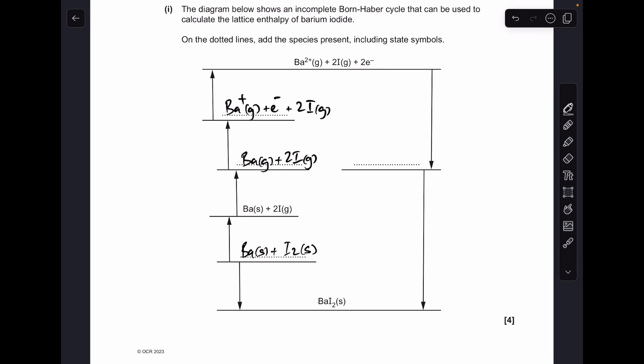They've done the second ionization energy for us, and now all we need to do is put those two electrons onto those two gaseous iodine atoms—that is the electron affinity. So here we need Ba2+ gas and 2I- gas. That's everything there.